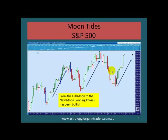This is an example I've called moon tides on the S&P. I've plotted the phases of the moon on this chart. This round circle here is the actual full moon, and the black dot represents the new moon. From the full moon to the new moon, it's called the waning phase, and they have been bullish three times in this particular period.